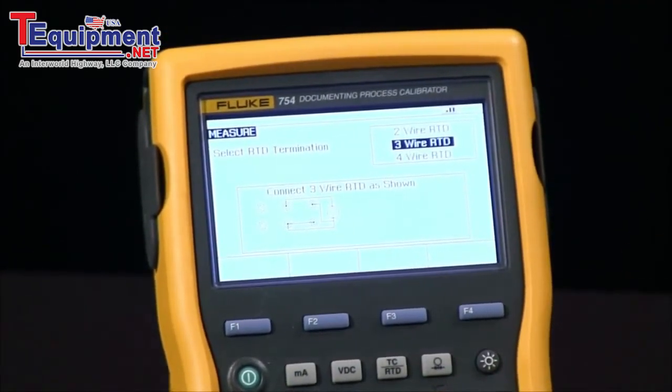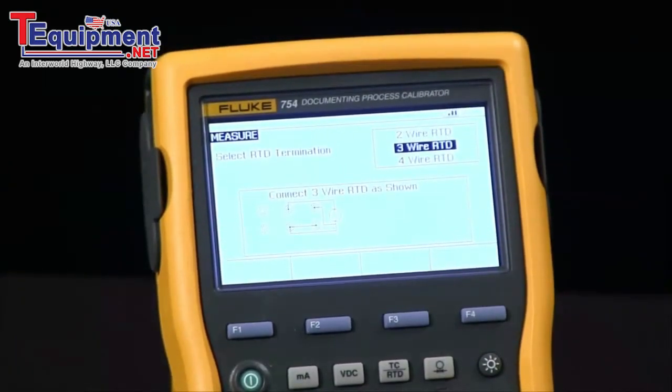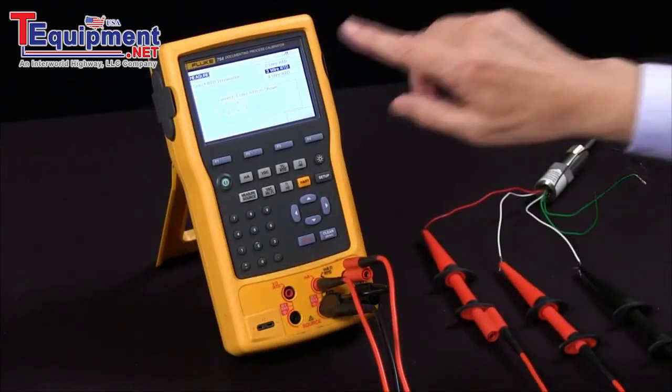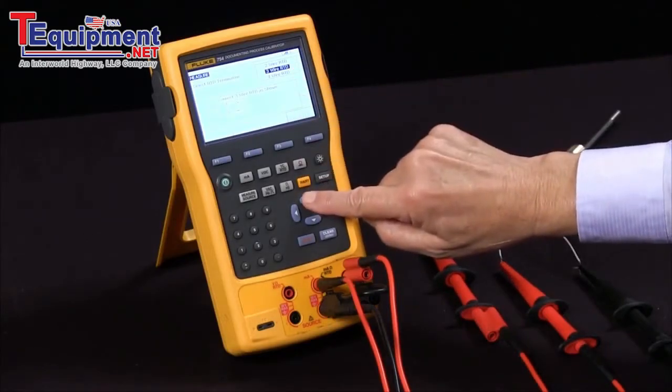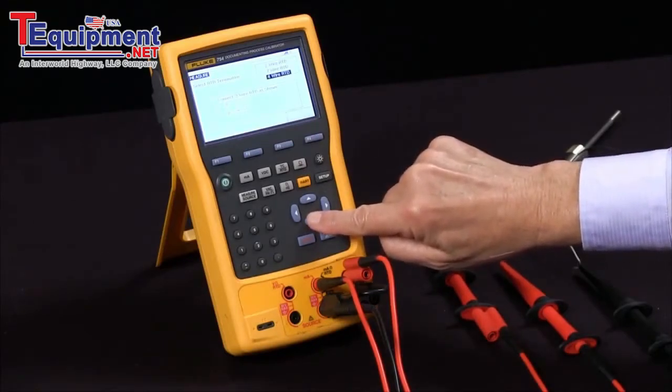Now we have the screen that shows how to connect two, three, or four wire RTDs. Right now we're highlighted on three wire RTD. We can change that and look at two wire or four wire connection diagrams.